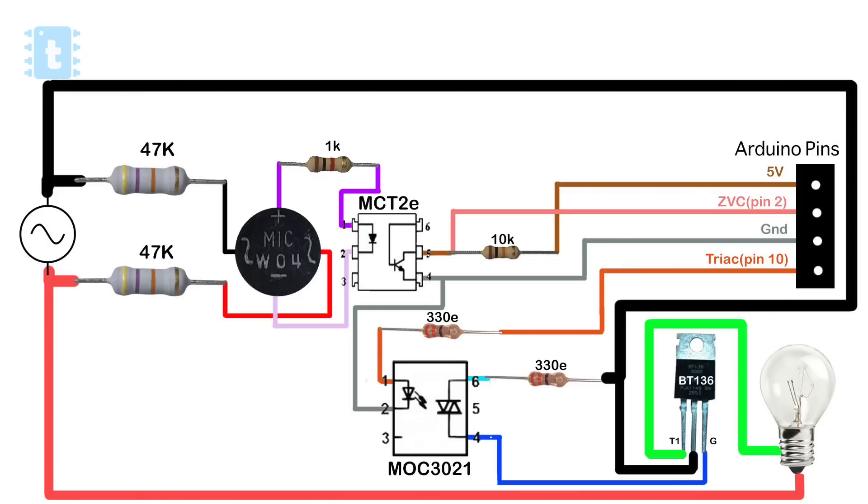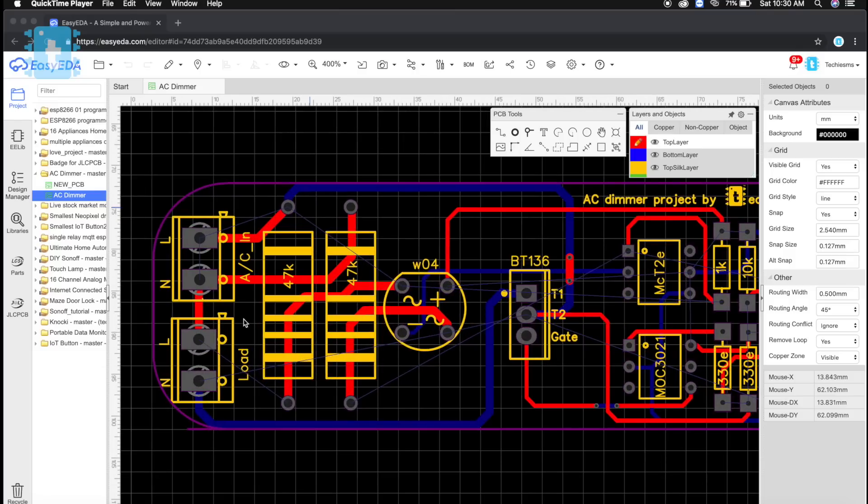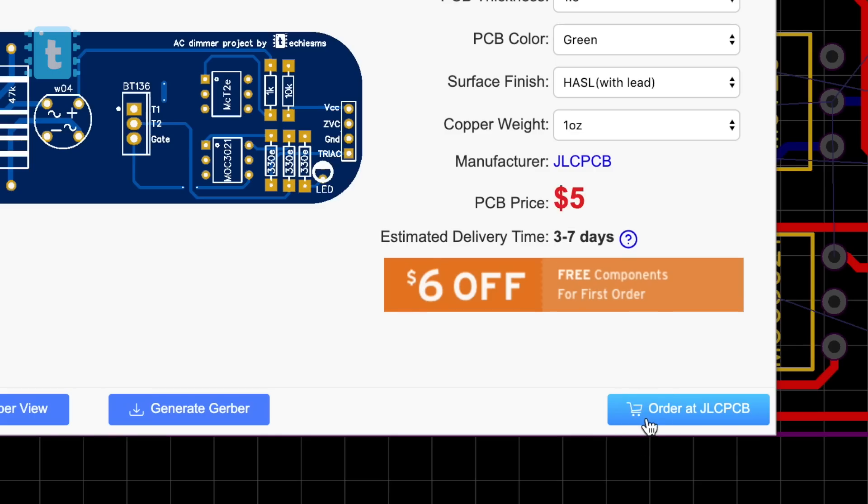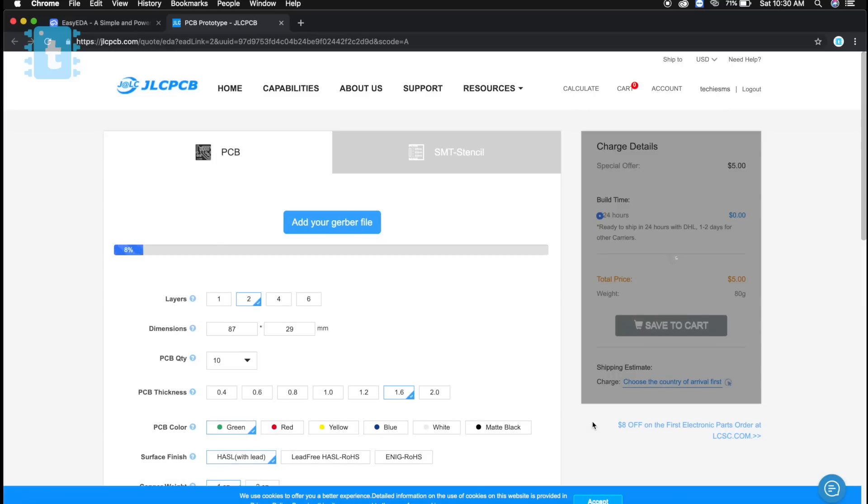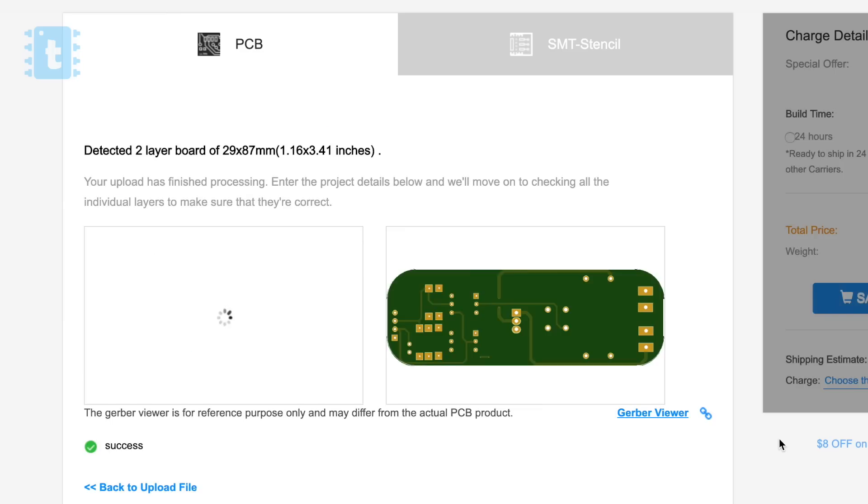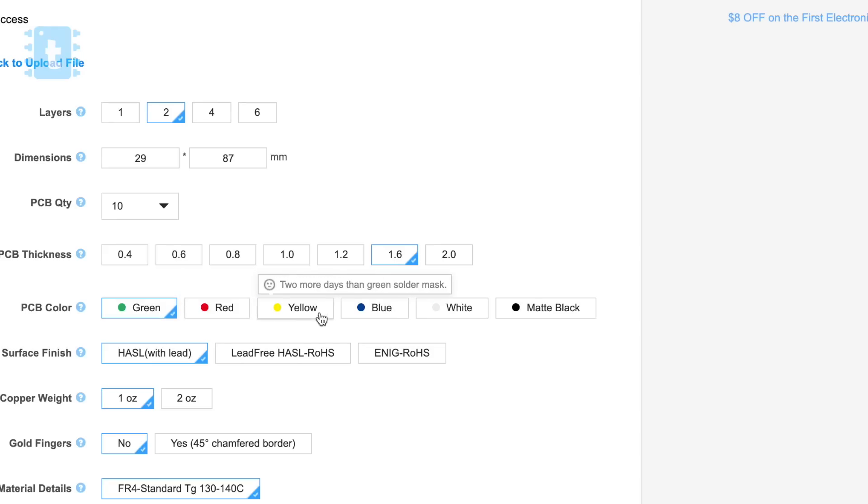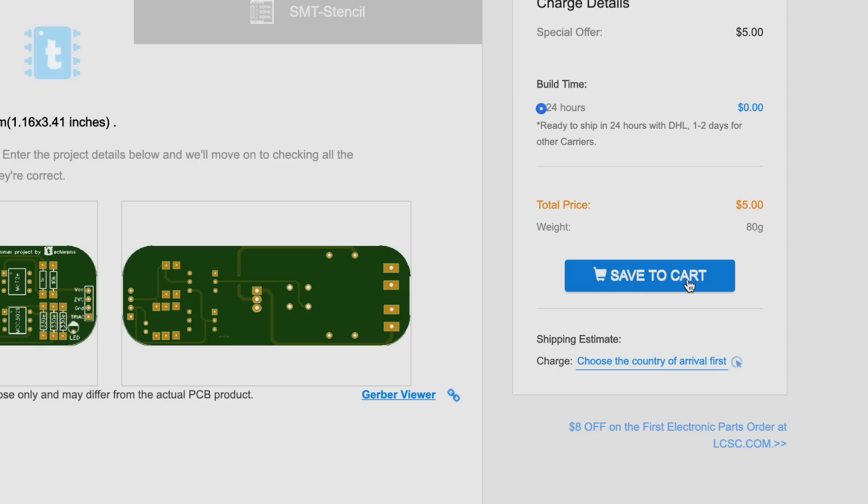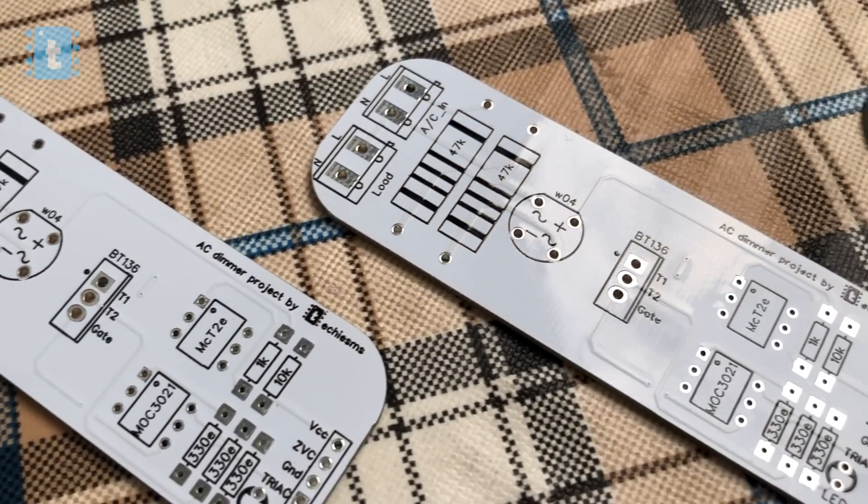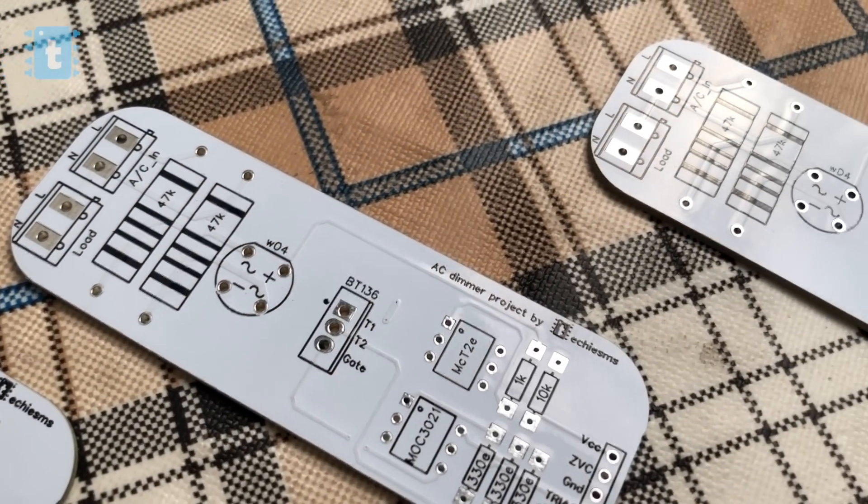Now the connections of all the components is something like this. To make the project look neat I designed my own PCB on EasyEDA.com and gave its order to JLCPCB. Ordering PCBs online is made very simple by JLCPCB - just upload the Gerber file, select the masking color, and pay for your order. You'll be receiving these PCBs straight at your home.